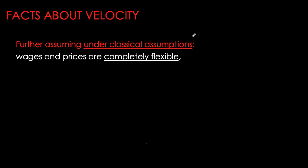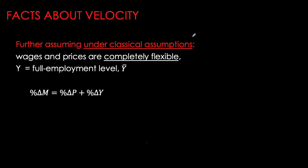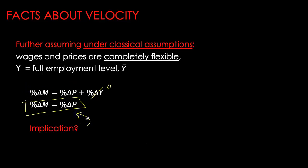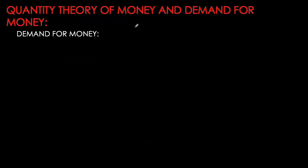Classical economists also hold a strong assumption about the flexibility of wages and prices. If wages and prices are fully flexible, output is always at its full employment level, meaning real GDP does not change. If real GDP is not changing, that term drops out and you are left with a very direct linkage between money growth rate and inflation rate. For policy makers, the implication is that to control inflation we must limit money growth rate. Economies like Turkey, Venezuela, and Russia, which have had very high inflation in the last 10 years, must limit their money growth rate.